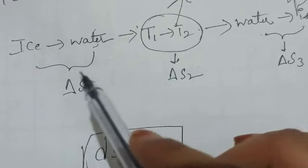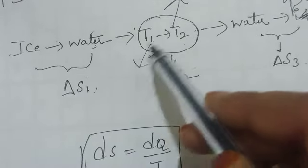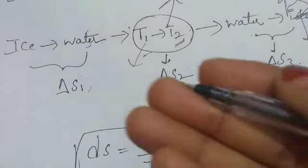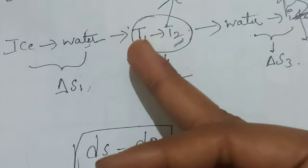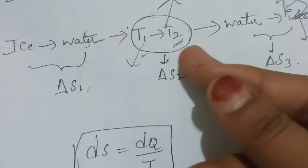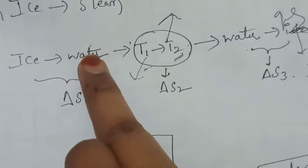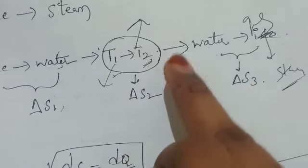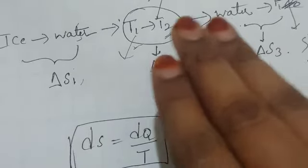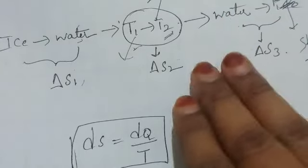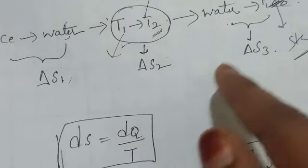In the second process, the water temperature at T1 will rise to T2 temperature. The water will rise to T2 temperature. We have delta S1, delta S2, and delta S3 for the three processes.